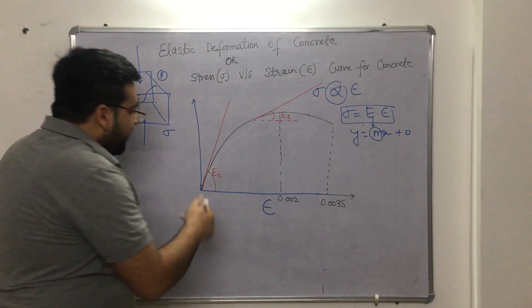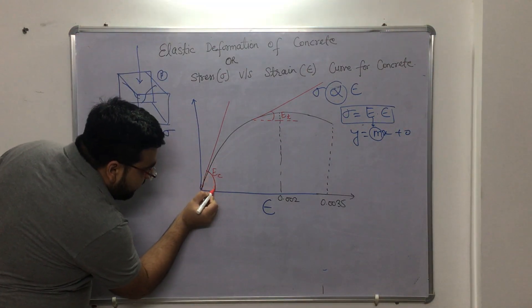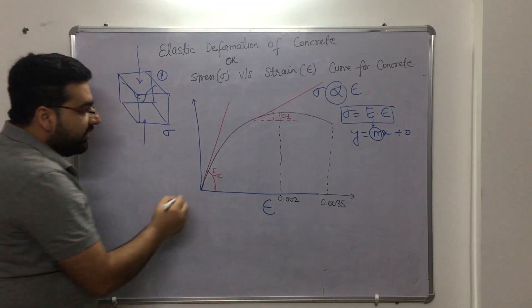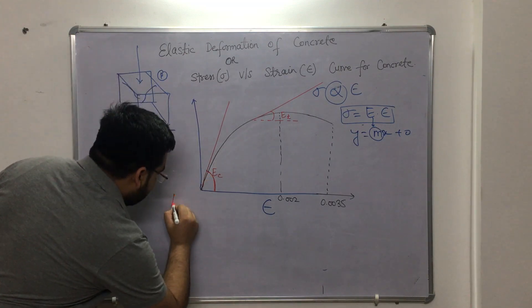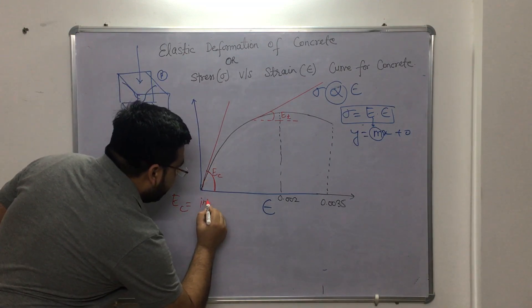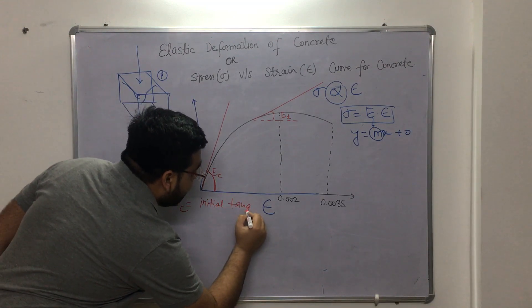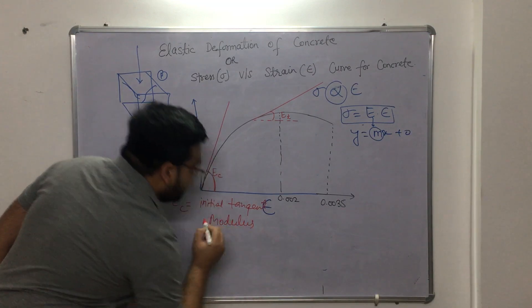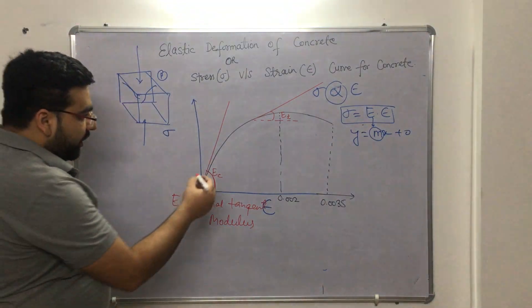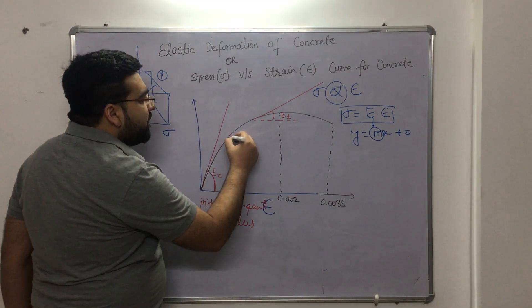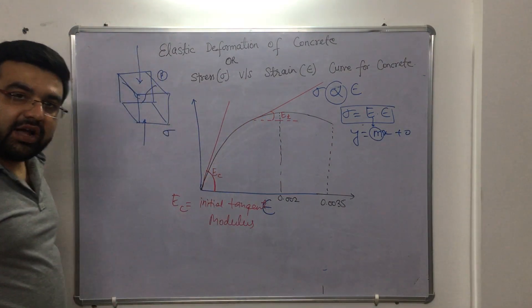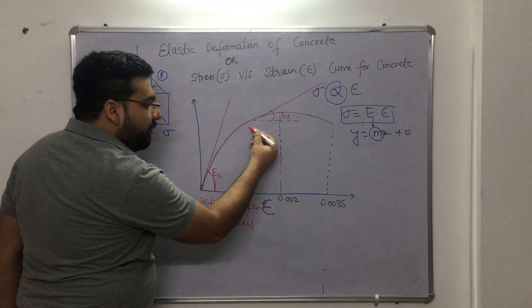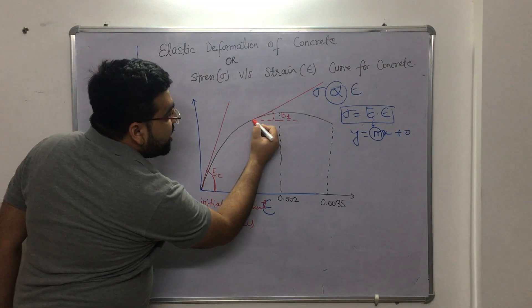Before going to the IS code curve, let me explain: if you draw a tangent at the initial part of this curve, this is known as the initial tangent modulus. Initially the curve is straight, and then slowly it transitions into a parabola. At this point the curve gradually changes from the initial straight portion into a parabolic shape.